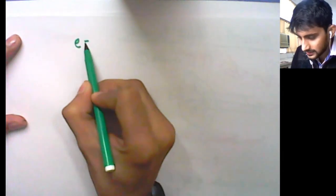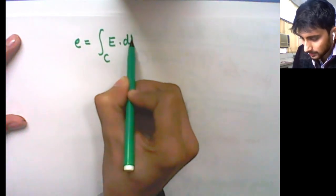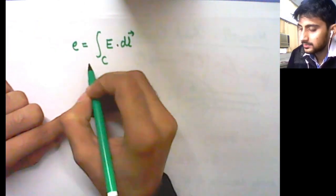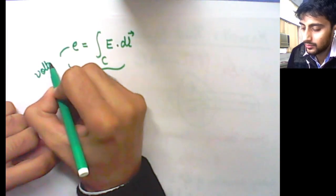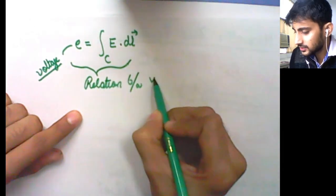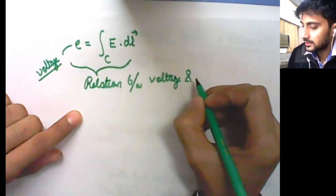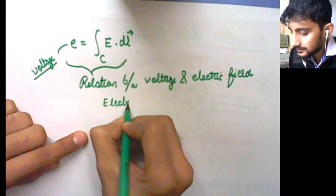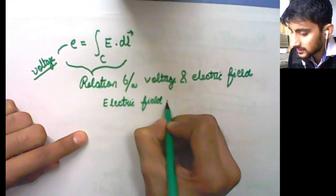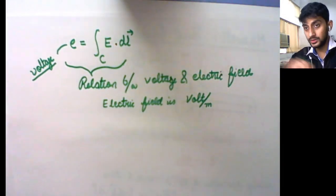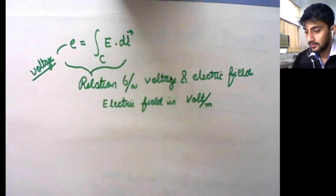We now have a line integral on the left and a surface integral on the right. Using Stokes' theorem, we can convert the line integral into a surface integral: the line integral of a vector A over a closed curve equals the surface integral of curl of A over the open surface bounded by that curve.